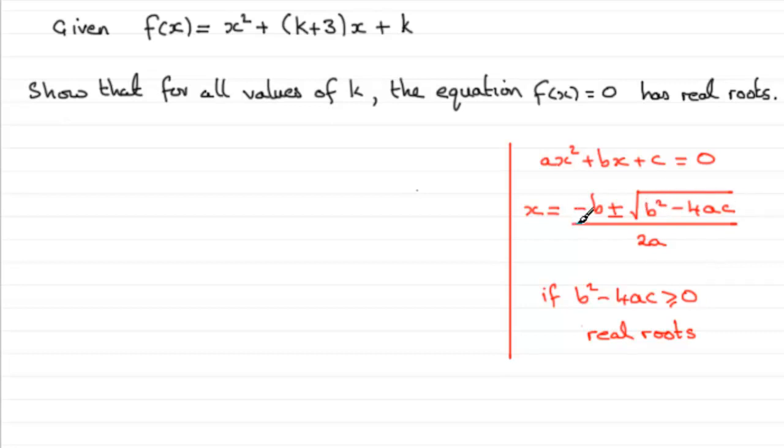But if we want real roots, roots that exist, we must make sure that this quantity, b² - 4ac, the discriminant, must always be greater than or equal to 0.